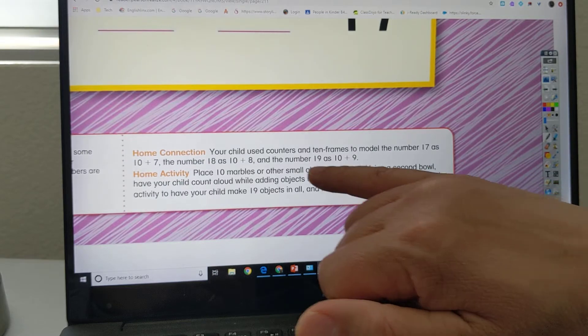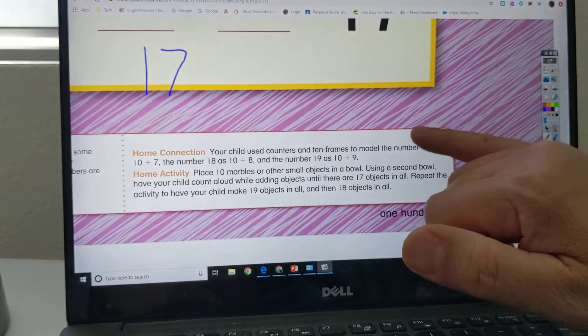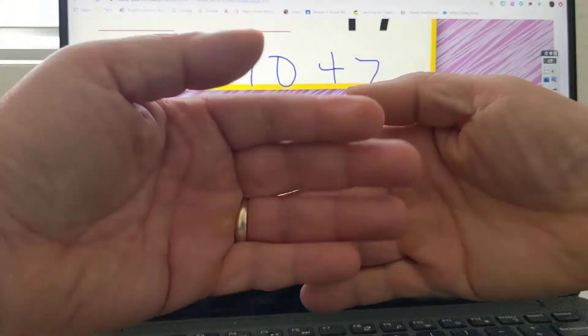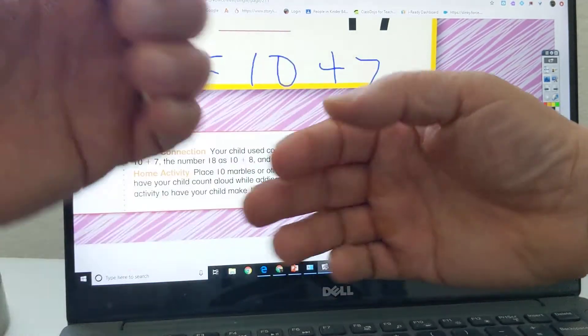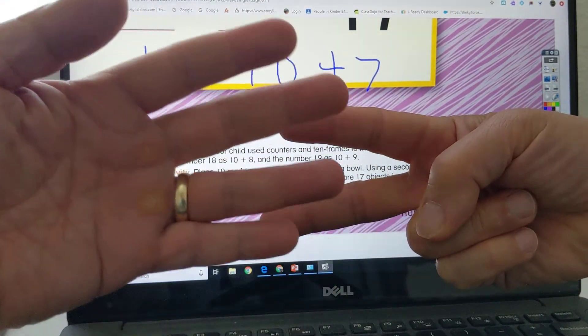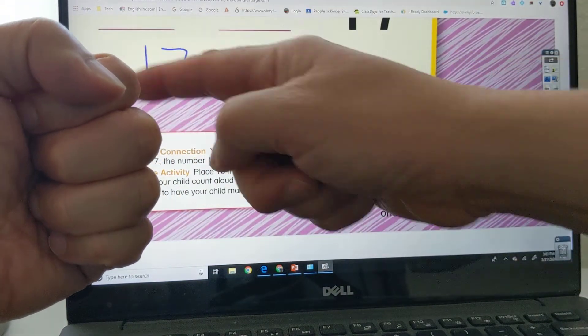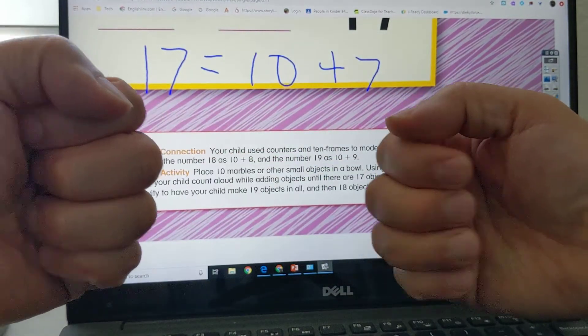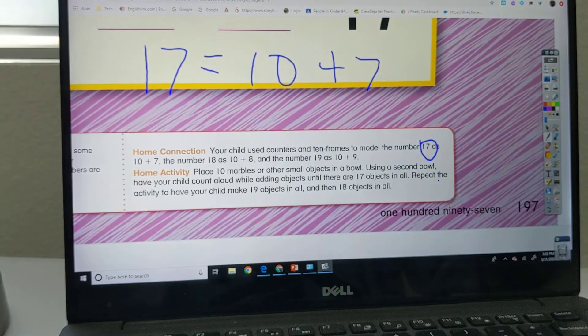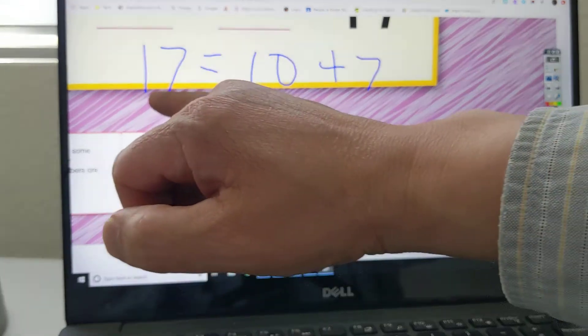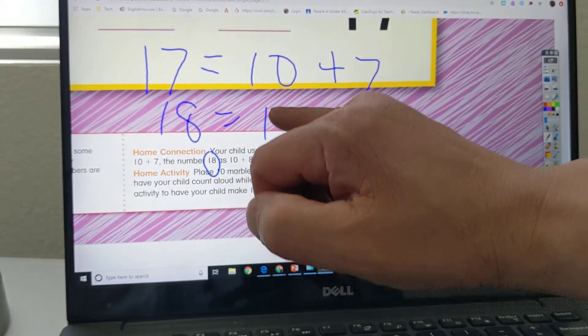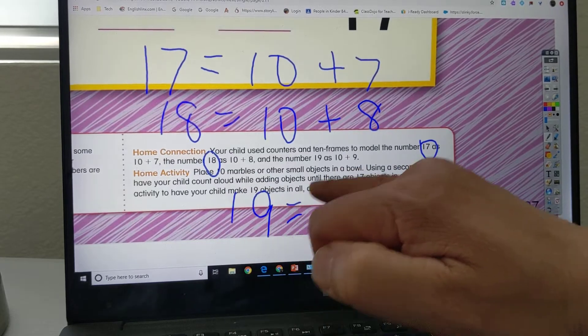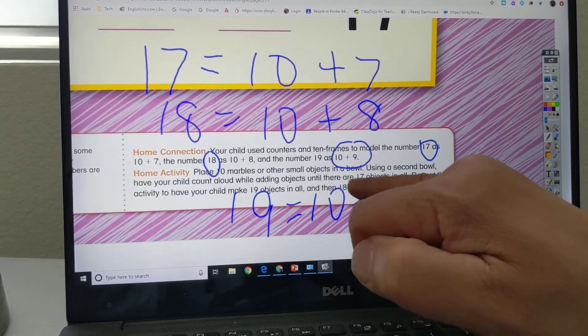So 17, the first number right here, is 10 plus 7 equals 17. You got 17. 17 is 10 plus 7. This number 17 is equal to 10 plus 7. And then 18, this number, is equal to 10 plus 8. And then it says 19 is equal to 10 plus 9.